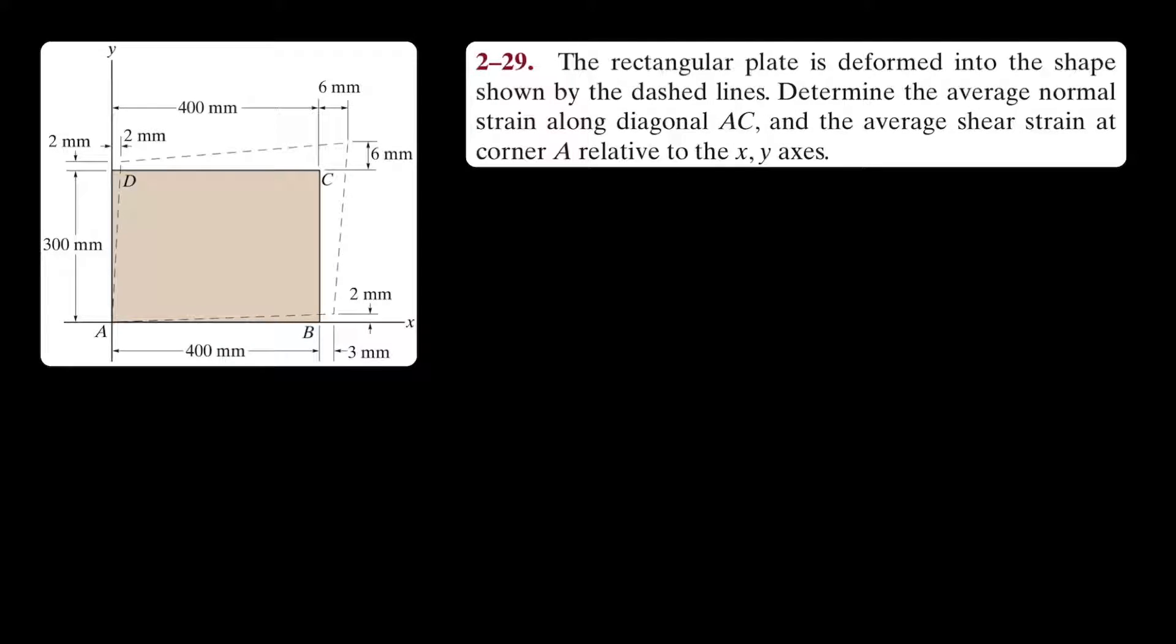Now let's look at an example problem. The rectangular plate is deformed into the shape shown by the dashed lines. Determine the average normal strain along diagonal AC and the average shear strain at corner A relative to the x and y axes. We're given a picture of the rectangular plate with all the dimensions of both the original and deformed measurements.